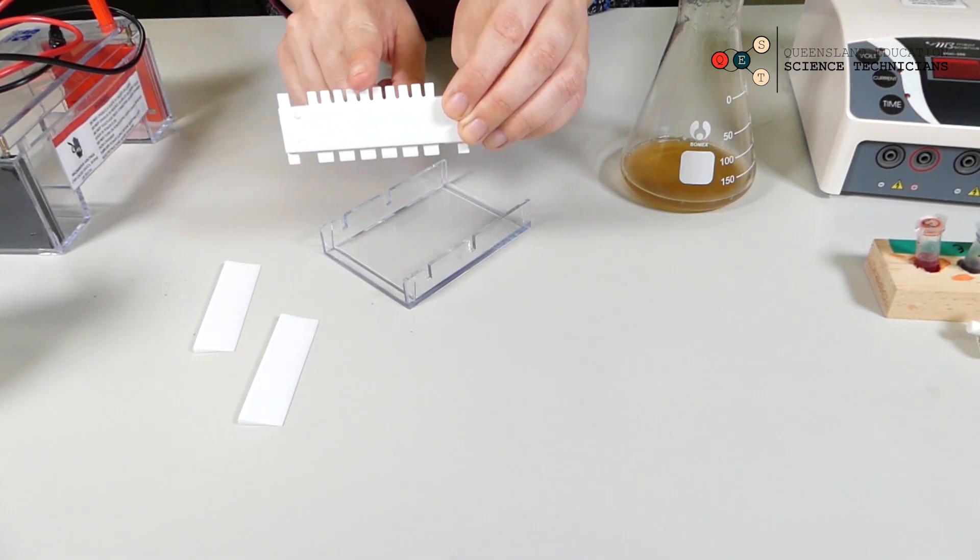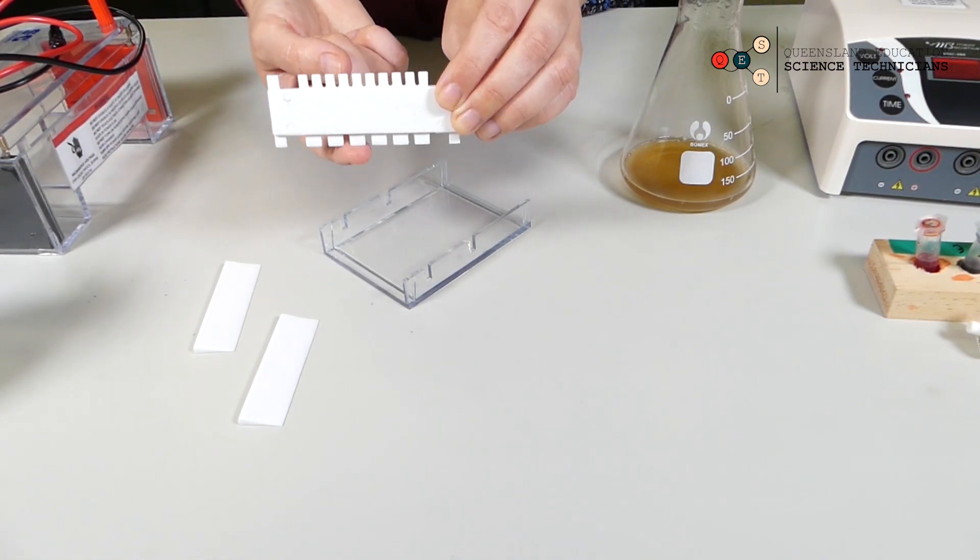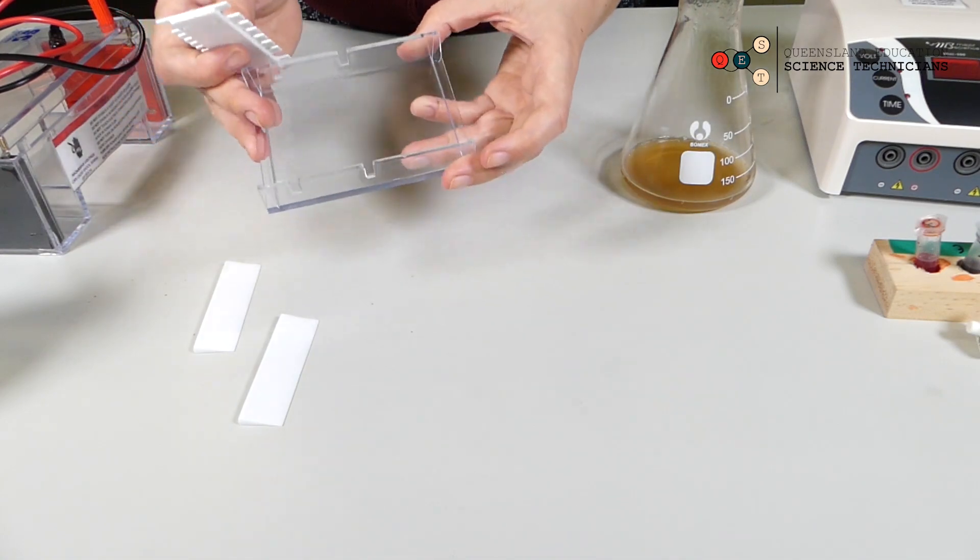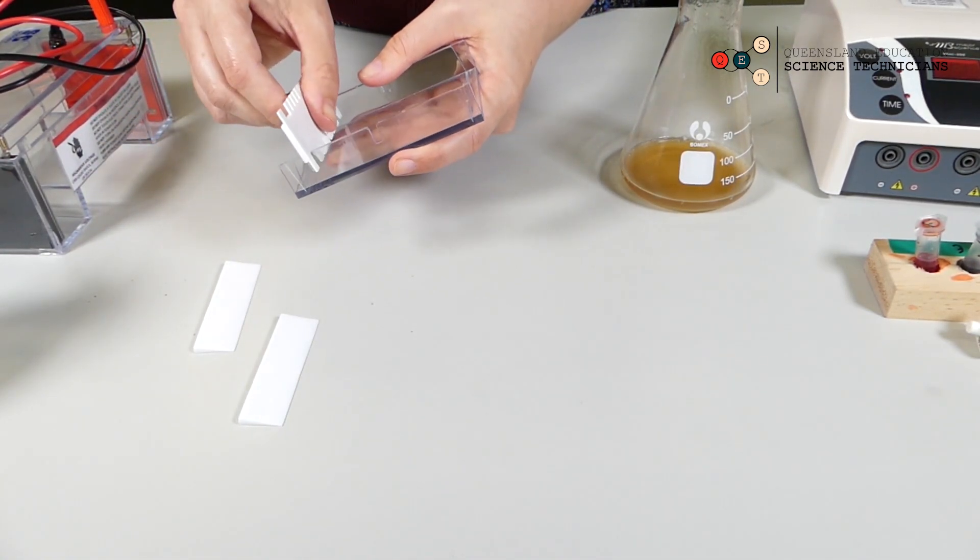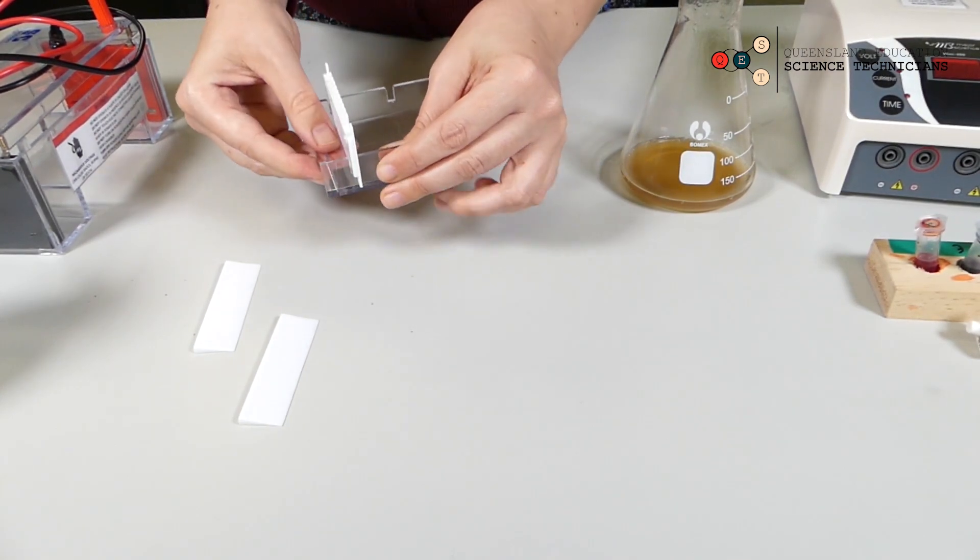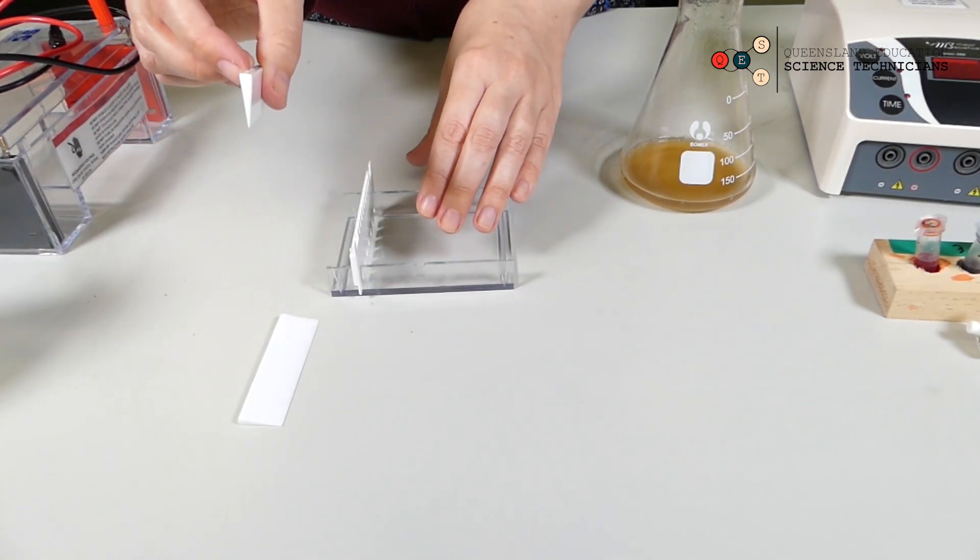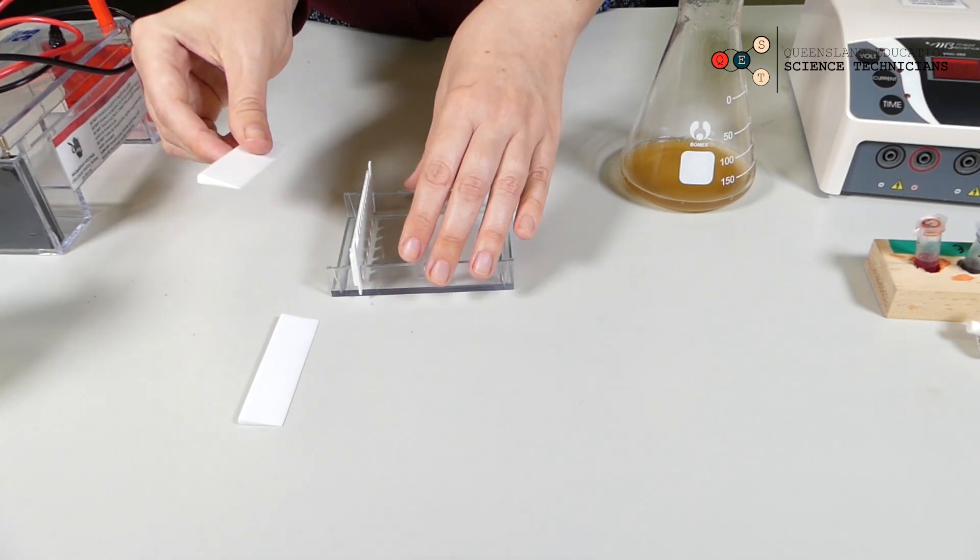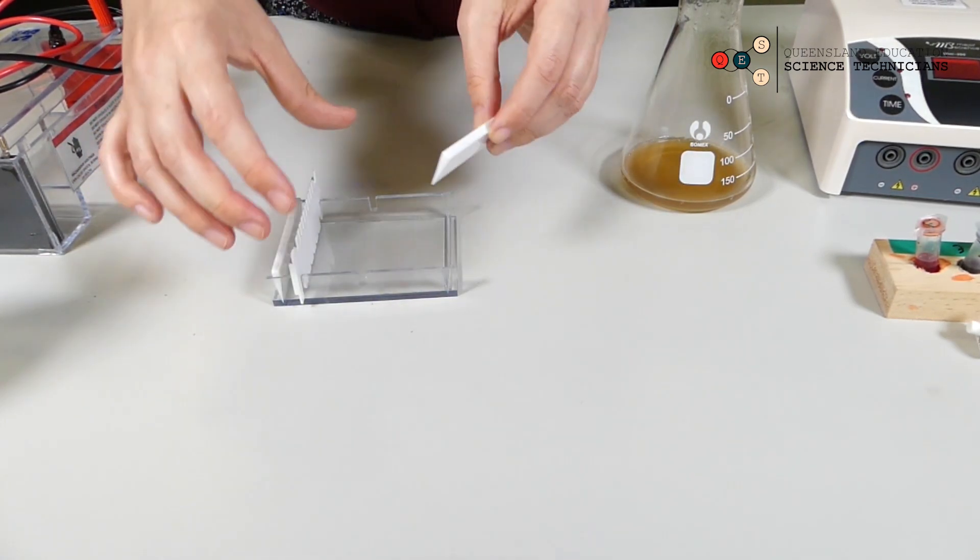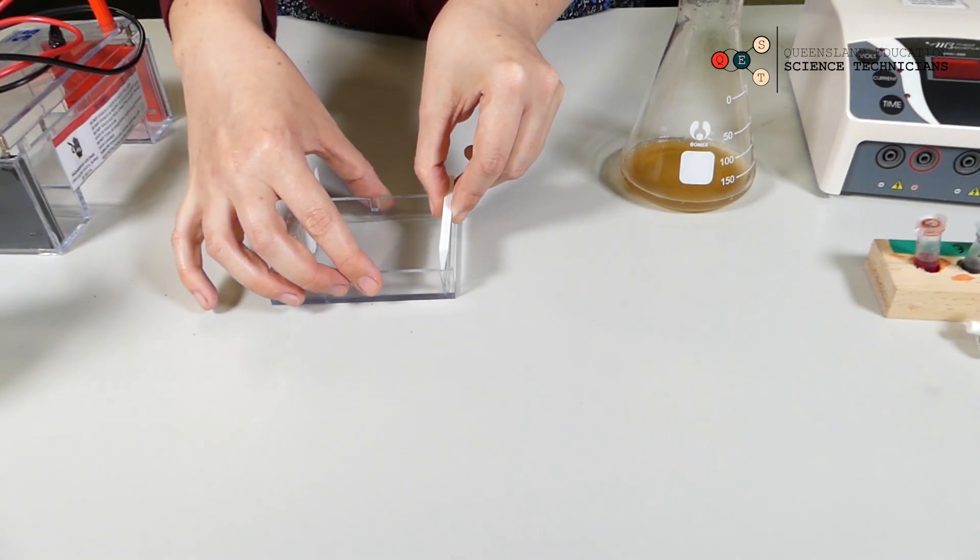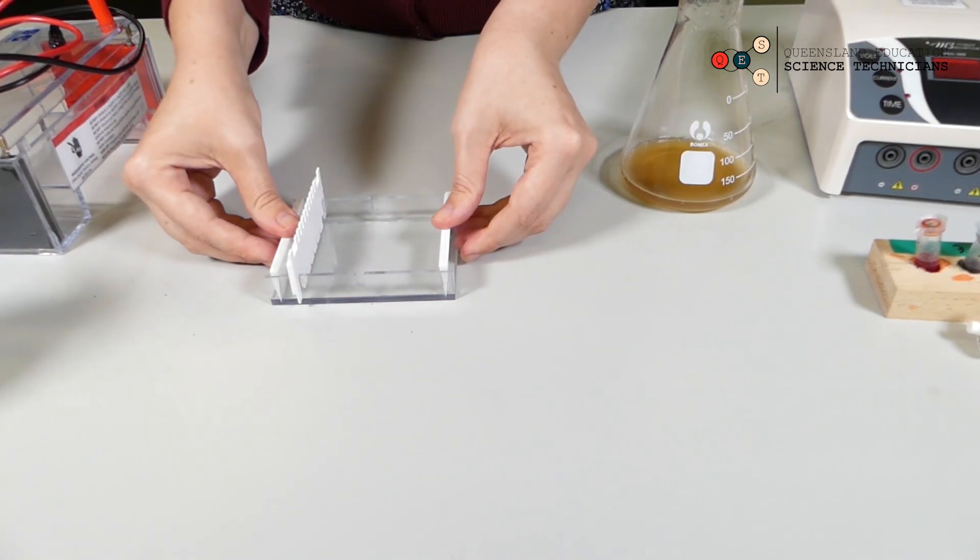We've got two options: small teeth and big teeth. We're going to use the big teeth. So we're going to put these at one end of our gel mold and then use these triangle gates to make the other end of the mold. This is so that the molten agar doesn't just run out all over the bench.